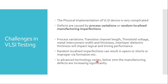Defects are caused by either process variations or random localized manufacturing imperfections. Process variations are variations which happen every time — it is not always true that we will get 100% equal manufacturing everywhere. These include transistor channel length variations, threshold voltage variations, metal interconnect width and thickness, and interlayer dielectric thickness — all of which impact logical and timing performance. Random localized imperfections are restricted to some local area and can result in either opens, shorts, or improper via formations. In advanced technology nodes below 7 nanometer, manufacturing defects are increasing significantly.